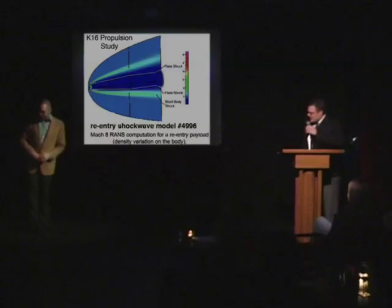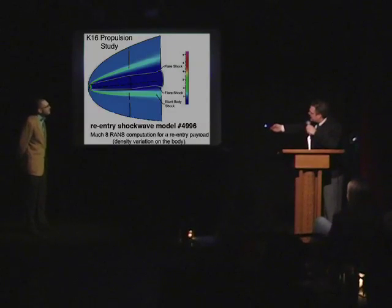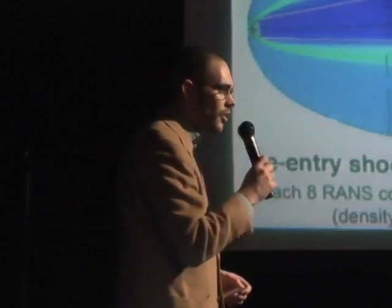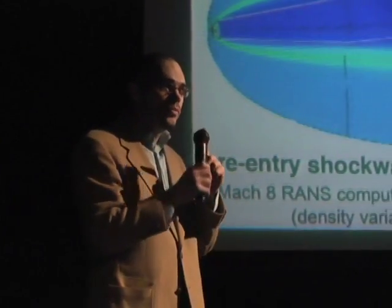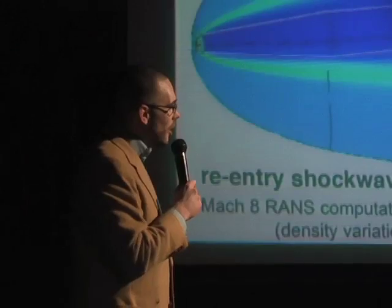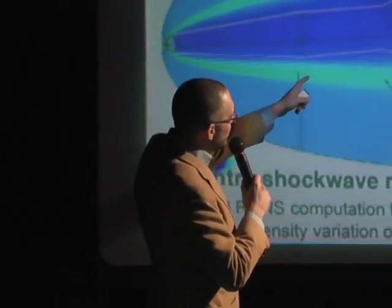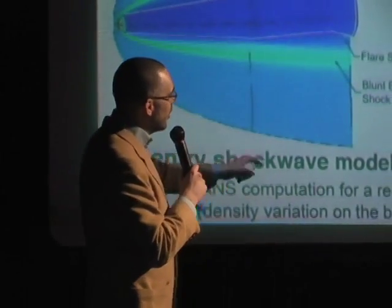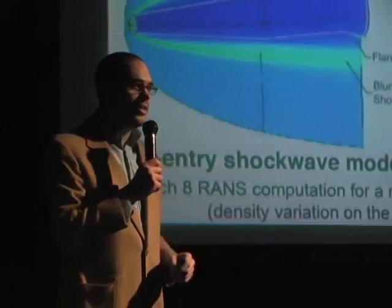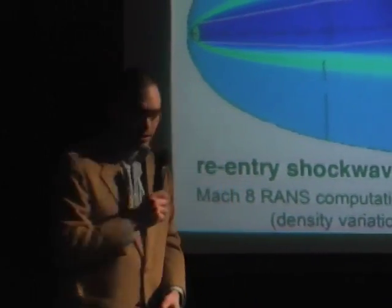So if you will, Dr. Fryman, you'll notice here that the K-16 propulsion unit — this is a mock-RANS computation for a re-entry payload on a sub-orbital vector system. You're going to notice that the flare shock re-entry variation is consistent with the K-16 propulsion dynamic system, and that's what we intended from the very get-go. That's correct. And if you'll also pay attention to the flare shock and the blunt body shock, we were able to get those down to the 1,000 to 2,000 Kelvin, which was pretty good.